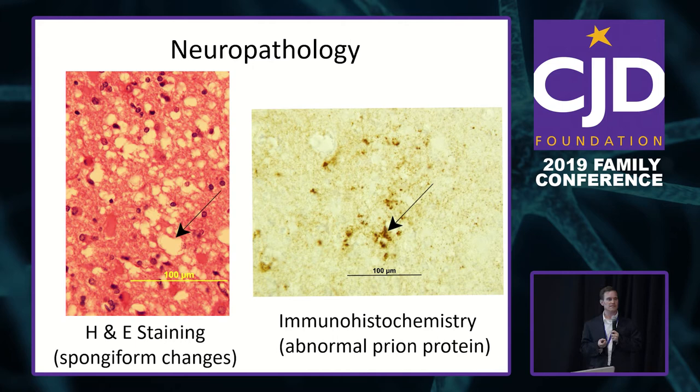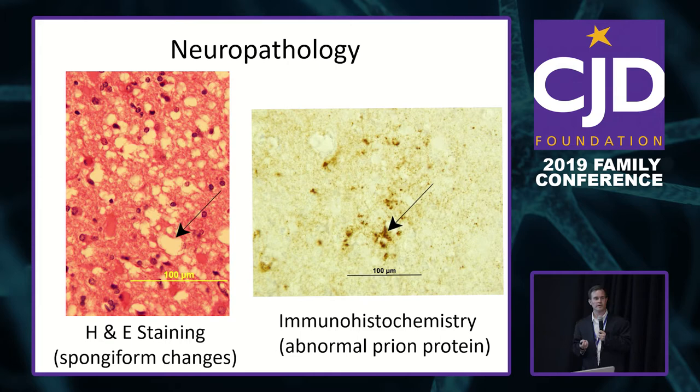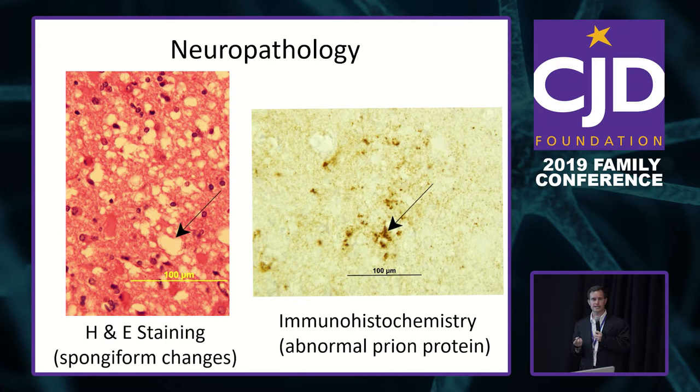Unfortunately, the only way to definitively diagnose prion disease is to look at the brain under the microscope. We do that two different ways. One is through H&E staining — the pink is actual brain tissue, and the white areas are holes, or vacuoles. Before we knew that prions caused prion disease, we used to call it spongiform encephalopathy because the brain has this spongiform-like appearance.